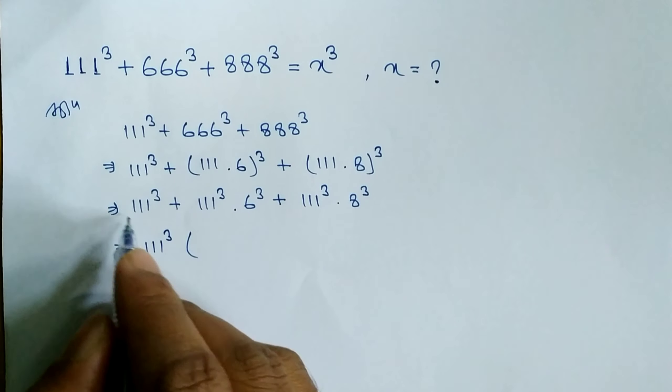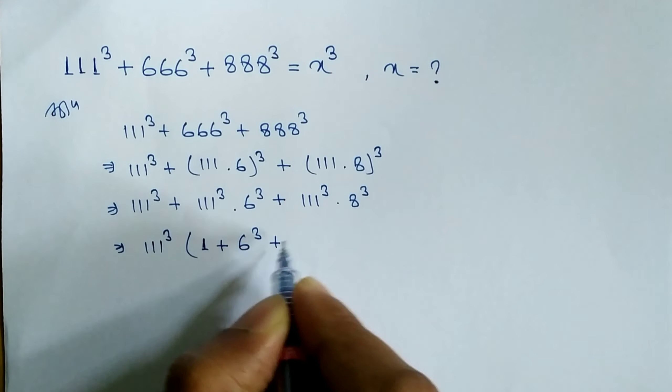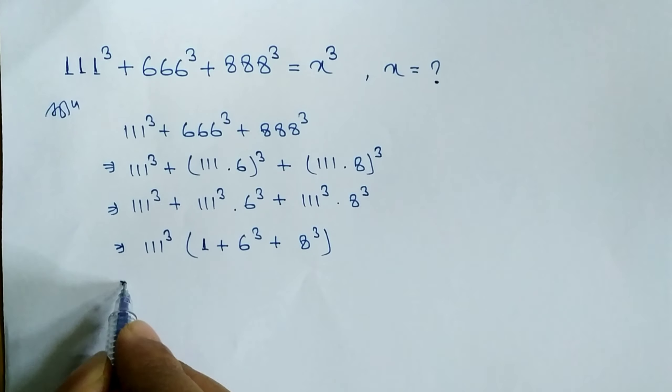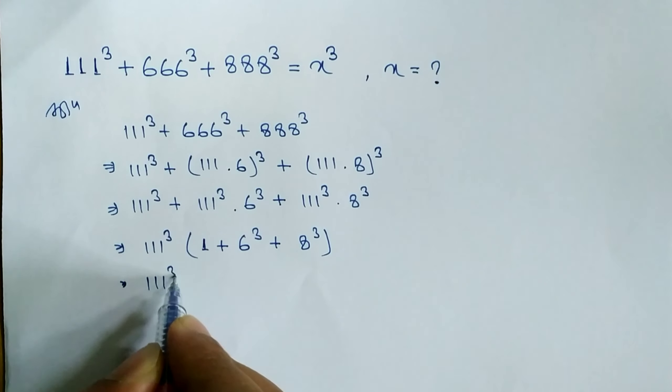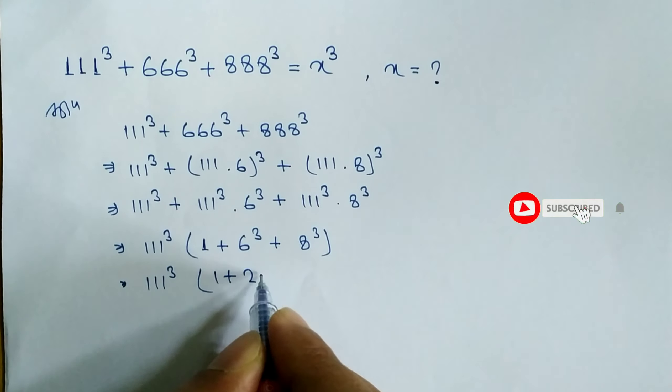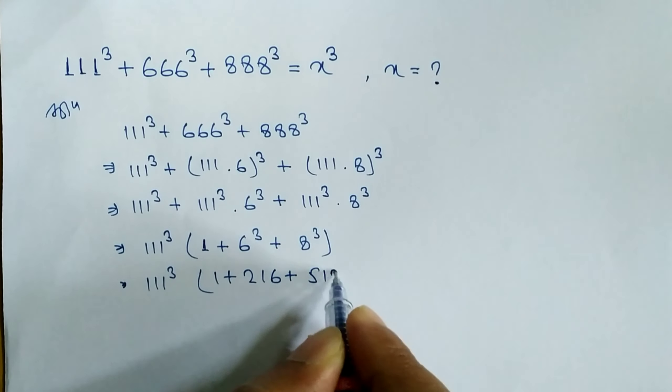What is remaining here? In first term 1 plus here 6³ plus here 8³. After this, 111³ times 1 plus 6³ is equal to 216 plus 8³ is equal to 512.